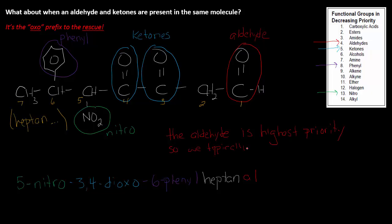so we typically will use its normal naming method. An aldehyde is normally named with the suffix AL. A ketone is normally named with the suffix ONE, but because the aldehyde is higher, it gets the normal naming method and we switch to the oxo prefix for the ketones.